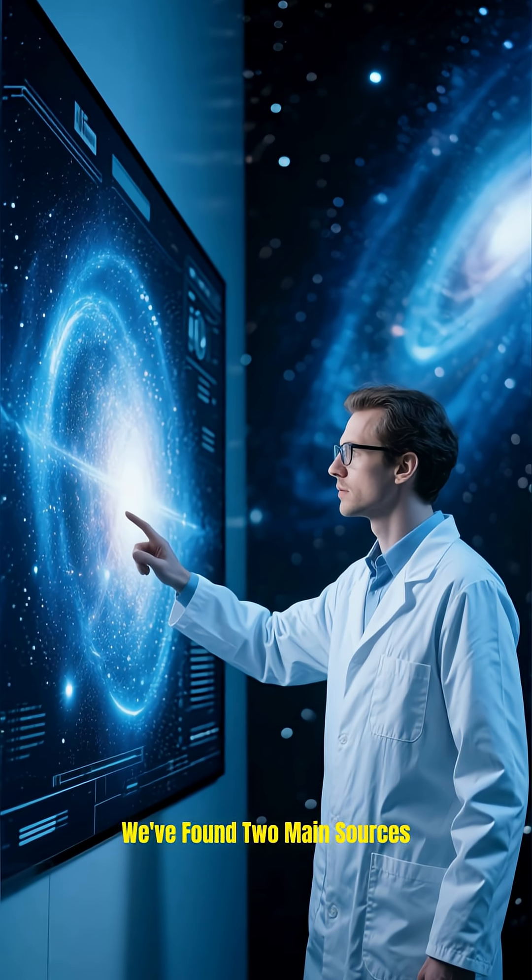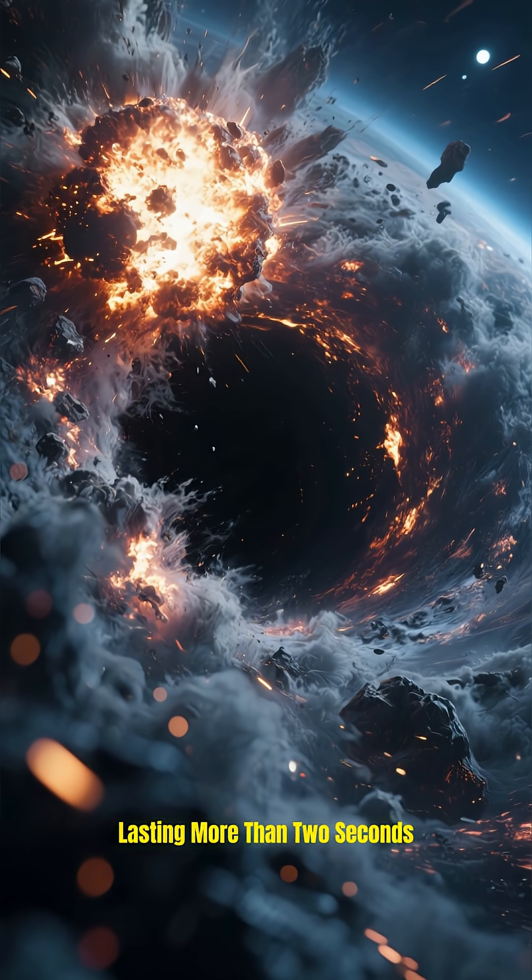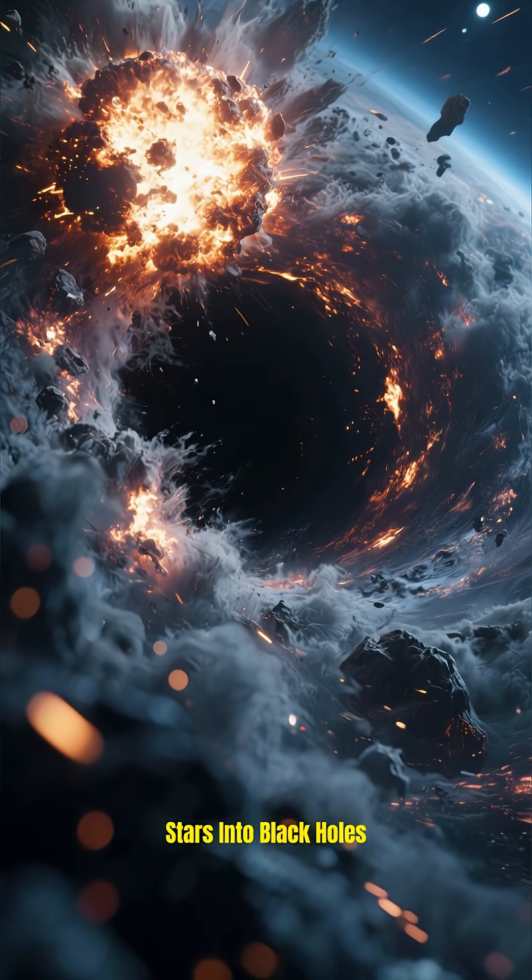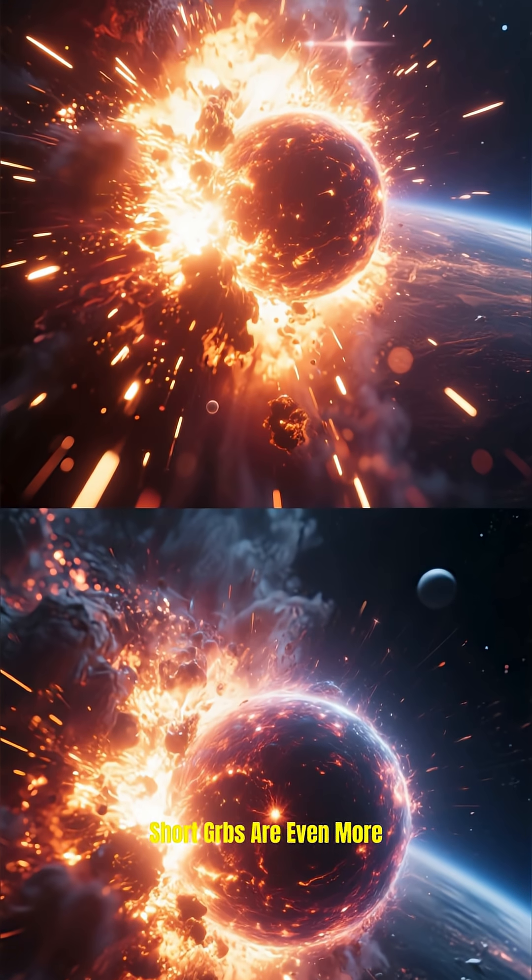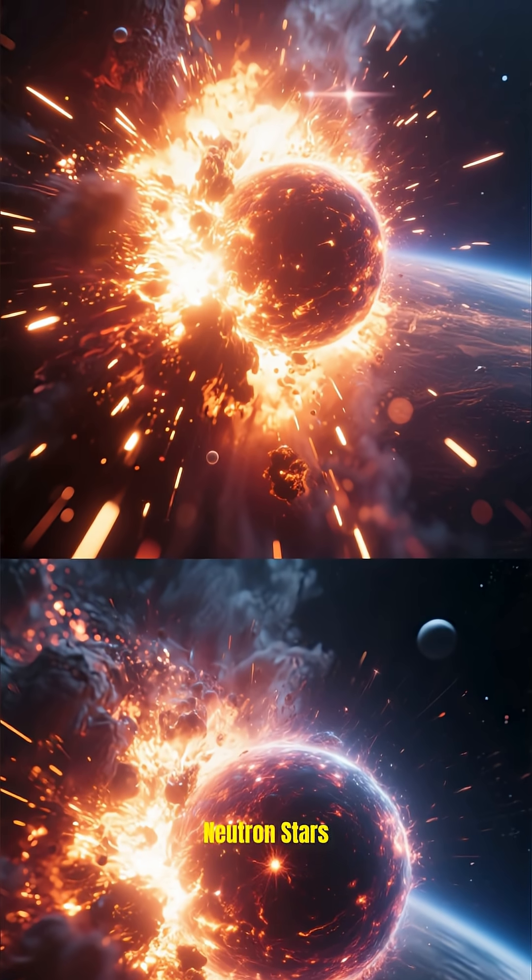We've found two main sources. Long GRBs, lasting more than two seconds, come from the collapse of massive stars into black holes. Short GRBs are even more dramatic. They're born from the collision of two super-dense neutron stars.